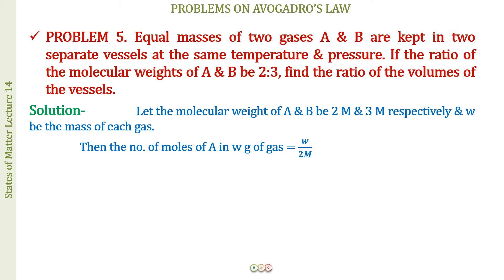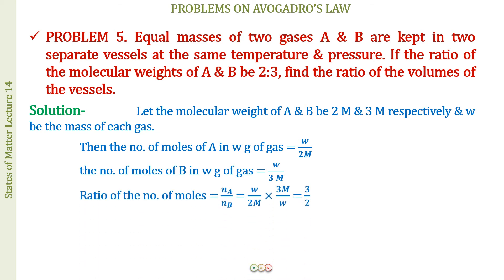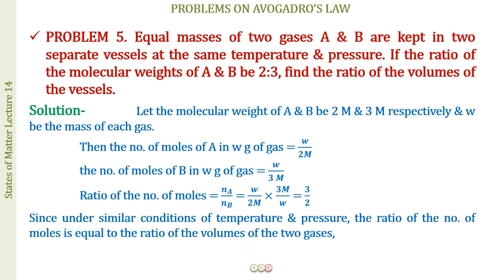The number of moles of A in W grams is W/2m, and the number of moles of B in W grams is W/3m. The ratio Na:Nb = (W/2m) : (W/3m) = 3:2.